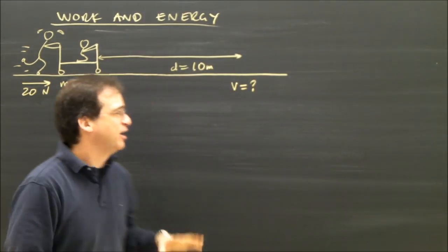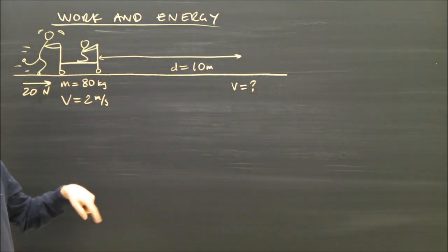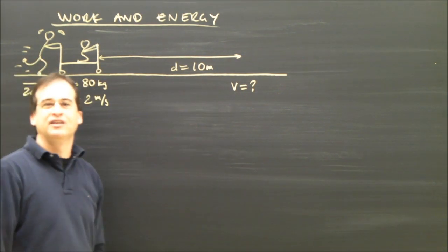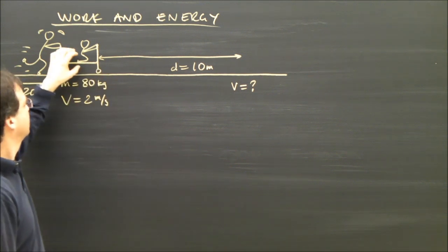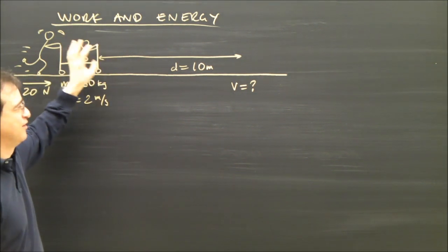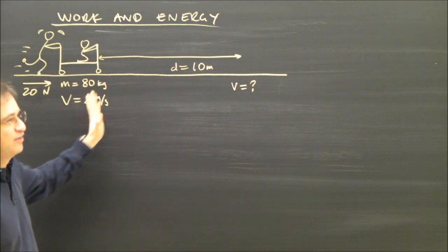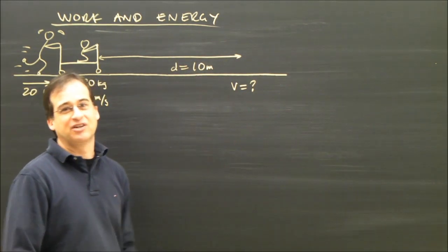Now, if the bed wasn't already moving, this would be an easy problem. I'd just say, well, the work they did was 20 times 10. They did 200 joules of work. What happened with that energy? It went into this bed and this person, and they're going faster. So, their kinetic energy must be 200 joules, and so I can tell you how fast they're going.